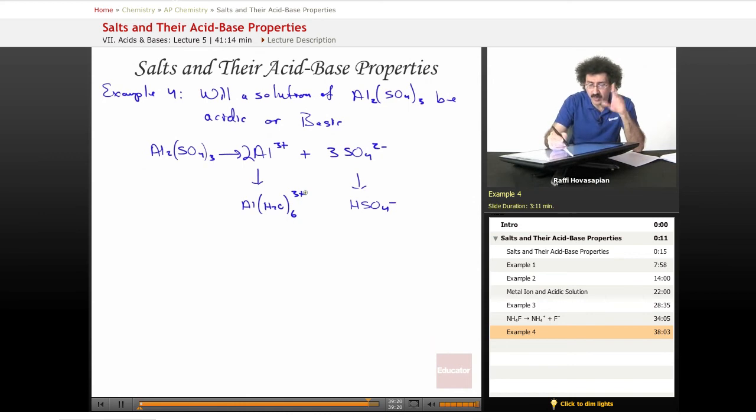So this is going to create a basic solution, this is going to create an acidic solution. We need to compare the two. We want to know the Ka of this. The Ka we already know is 1.4 times 10 to the negative 5.